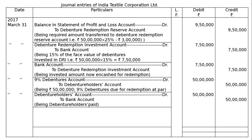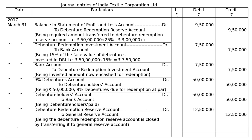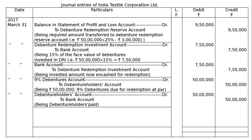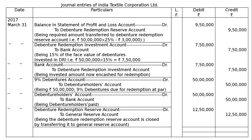The final entry is a transfer entry: Debenture Redemption Reserve account is transferred to General Reserve account — Rs 12 lakh 50,000 — being the DRR account closed by transferring to General Reserve as the total debentures worth Rs 50 lakhs have been redeemed. When all debentures are redeemed, the DRR account is closed by transferring to General Reserve. The amount is Rs 12 lakh 50,000 each in the debit and credit columns. This is the final answer.